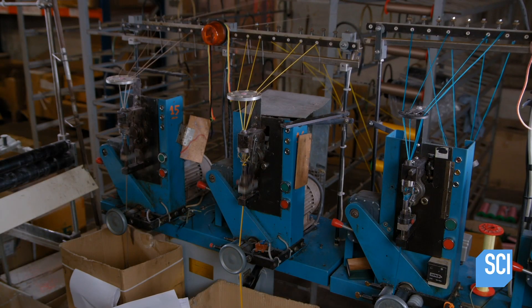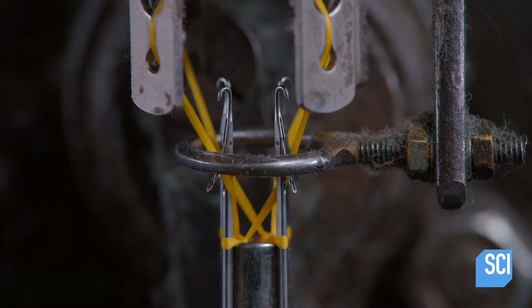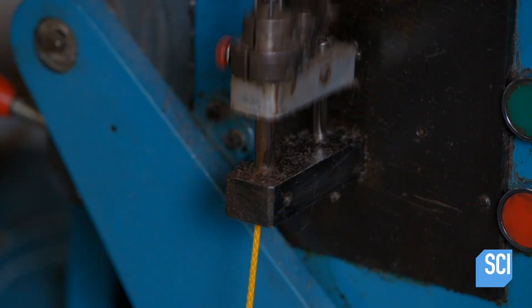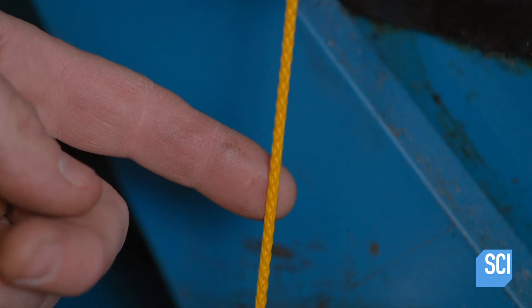Some shoelaces are made of knitted rather than braided cord. The cones of thread feed the knitting machine directly. The machine's four latch needles can perform two types of knitting stitches to produce round cord.